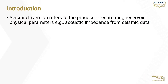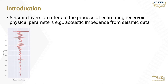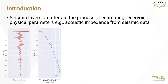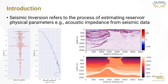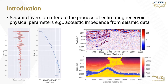Seismic inversion refers to the process of estimating reservoir physical parameters — for example, acoustic impedance — from seismic data. Given a seismic trace, we can invert it to obtain the corresponding physical property trace of the rocks. Inversion is usually performed on complete seismic sections or volumes, trace by trace, to obtain the corresponding rock property volume. Seismic inversion plays an important role in seismic interpretation, because the building of rock property models allows the identification of rock types with similar property values, helping with more accurate delineation of oil and gas reserves.